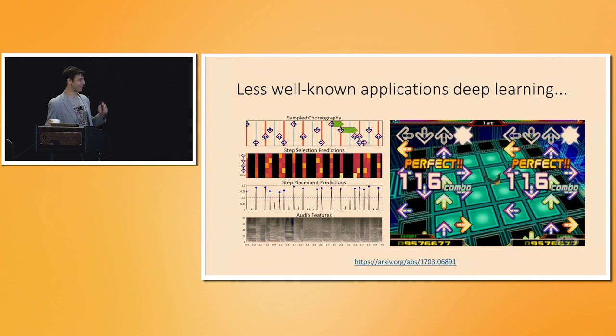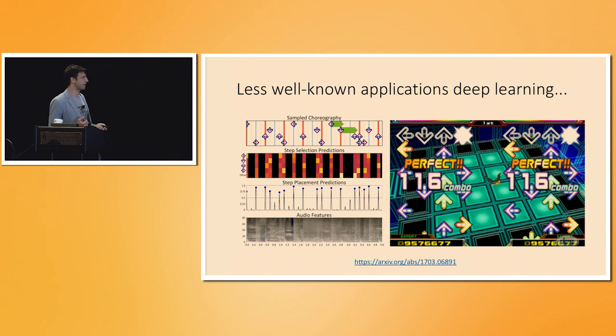There are some less-known breakthroughs — for example, with a colleague we showed that we can choreograph Dance Dance Revolution choreography using deep neural networks. So you can do any kind of weird structured prediction task, as long as you have lots of data. This is something the field and industry are quite excited about.